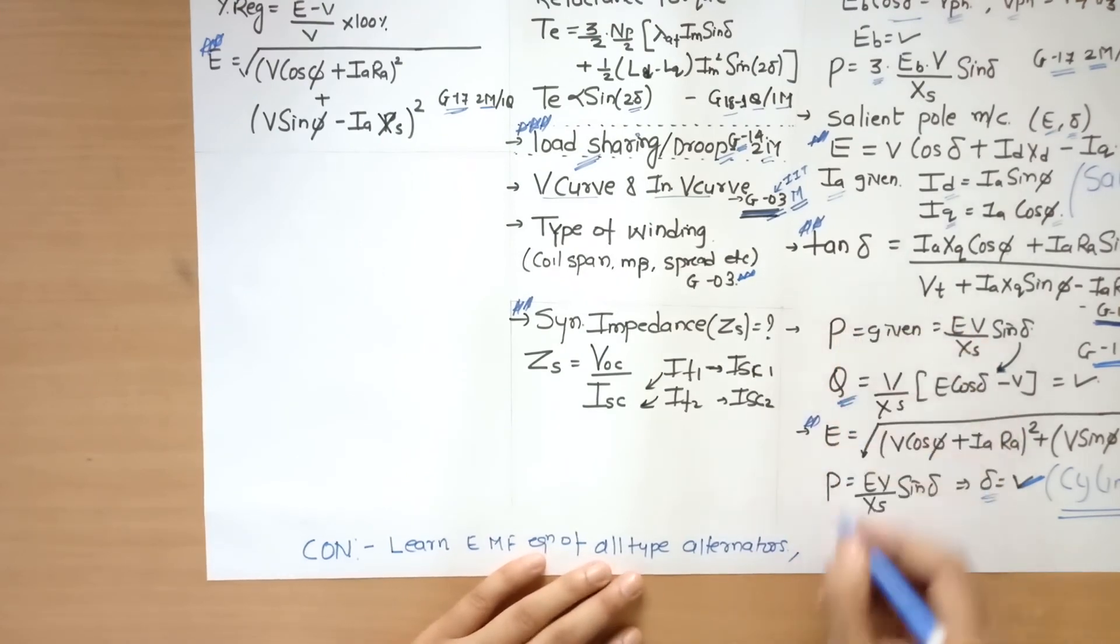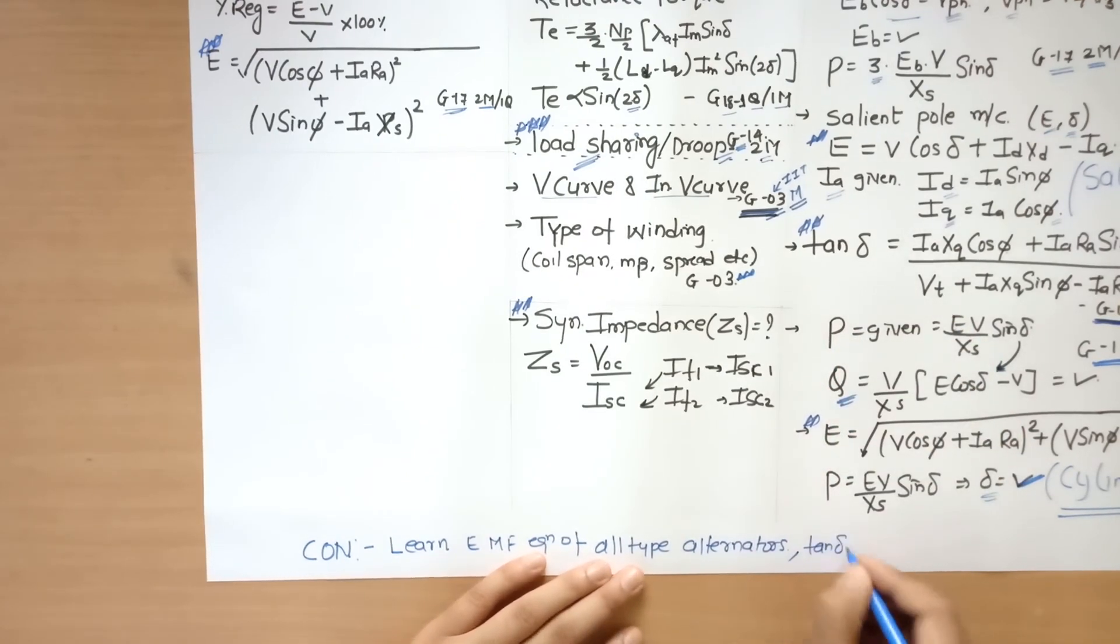And then you need to learn this tan delta equation. This equation will give you some kind of relevant parameter that will be used in the EMF equation of salient pole machine or cylindrical machine also.